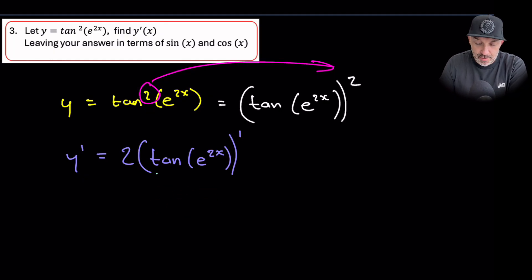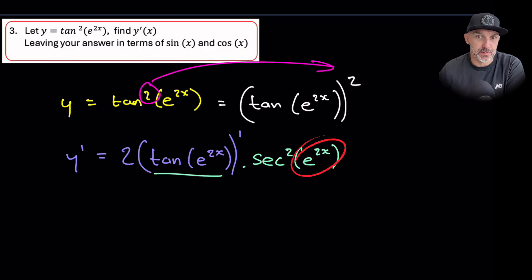But now, with chain rule, we had to multiply by the derivative of the bracket. Now, the derivative of that will be sec squared. So sec squared, and we've got e to the 2x. Because, again, we didn't change anything on the previous ones when we changed it to sec squared. We left that the same.